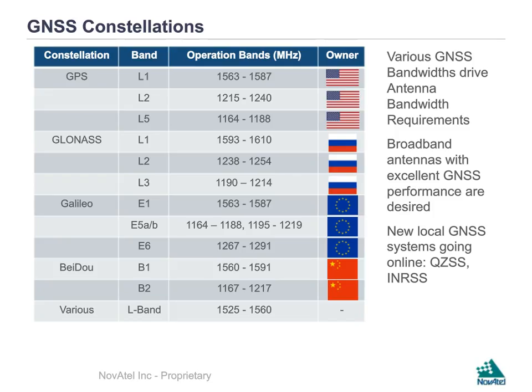As most people on this call know, there are a variety of GNSS constellations in use: GPS, GLONASS, Galileo, BeiDou, and various L-band bands covered by various providers. The point here is that we have various GNSS bandwidths that drive antenna bandwidth requirements. It is desirable to have broadband antennas with excellent GNSS performance. Also notable is that local GNSS systems are coming online, such as QZSS in Japan and IRNSS in India.